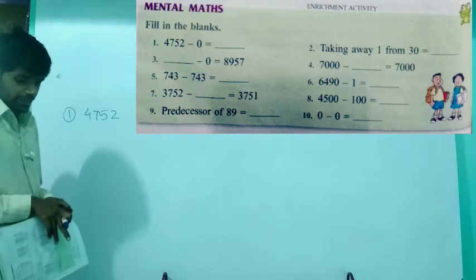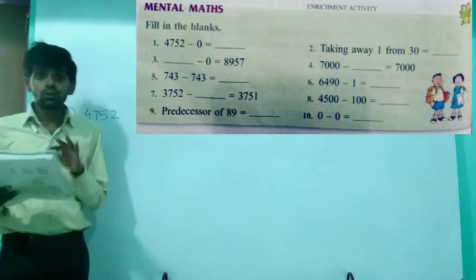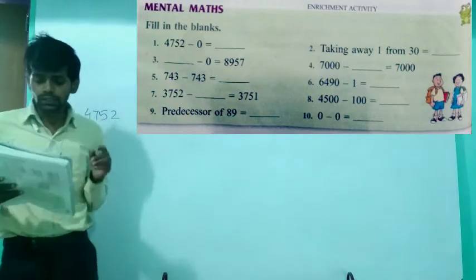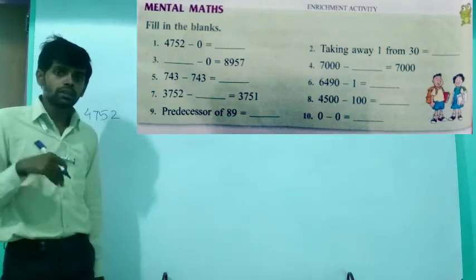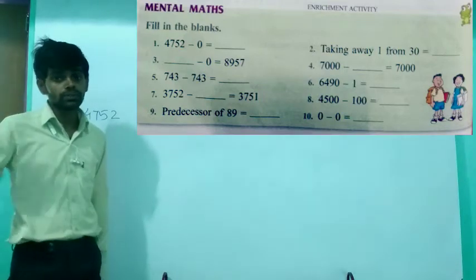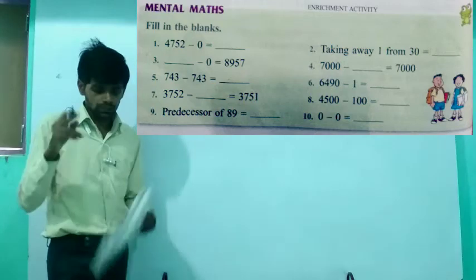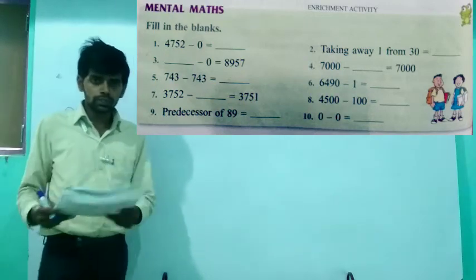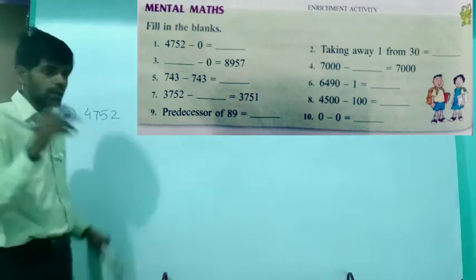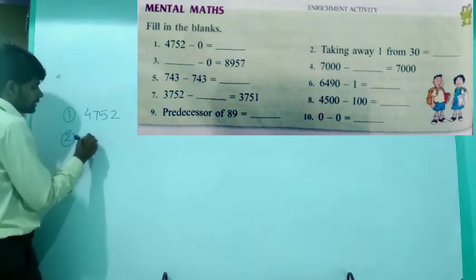The first answer is 4752 — the number itself. Let's see the second one: taking away 1 from 30. Taking away means subtracting — we subtract 1 from 30. The second answer is 29.